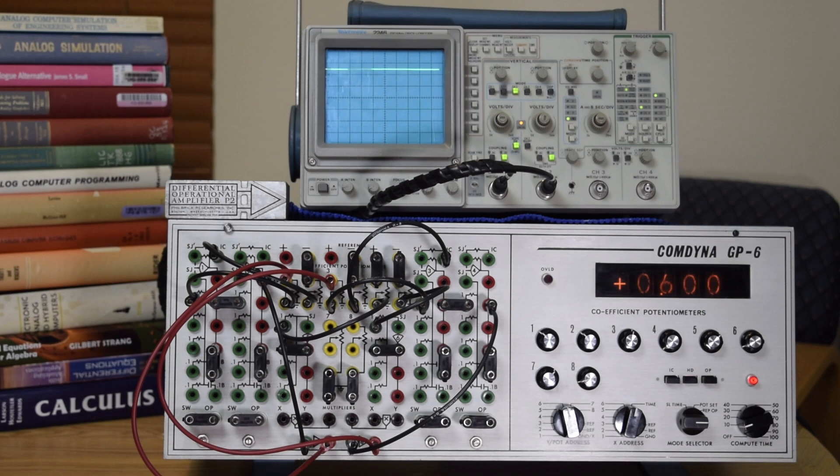It's got a couple of interesting features that made me want to get a hold of this one. It's a very early model, so it's got a Nixie tube display for the digital voltmeter instead of the LED display with the more modern units. Another interesting thing is it included a diode function generator. We'll take a quick look at that.